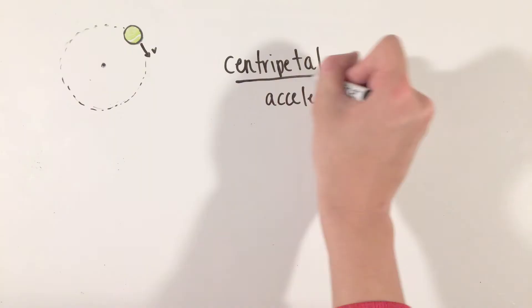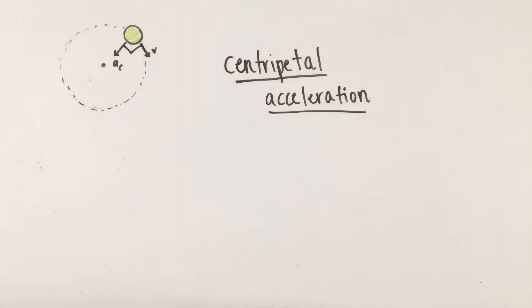This is called the centripetal acceleration, which has a value of the velocity squared divided by the radius of the circular path. This centripetal acceleration also will always point towards the center of the circle and always points perpendicular to the object's tangential velocity.